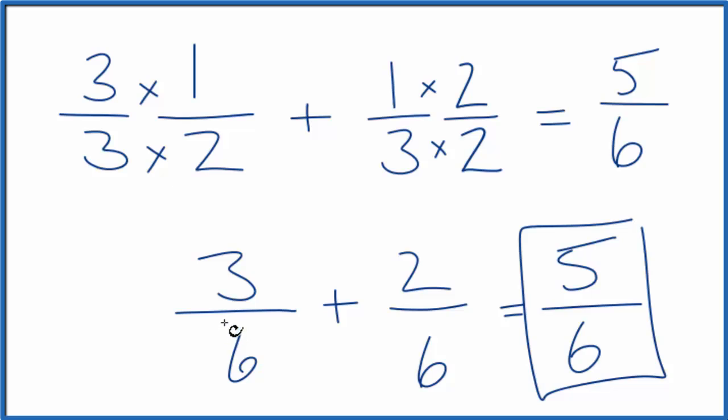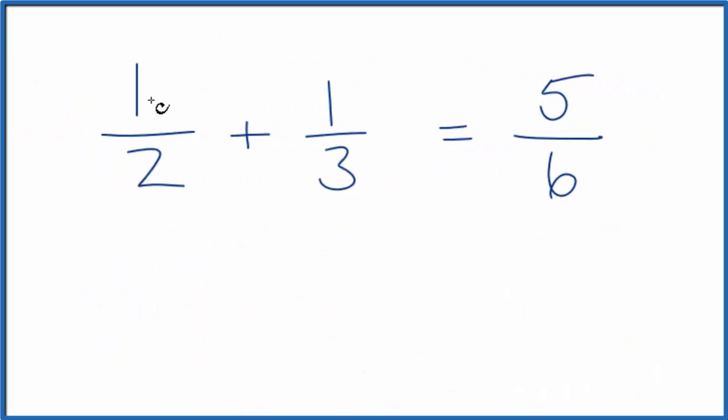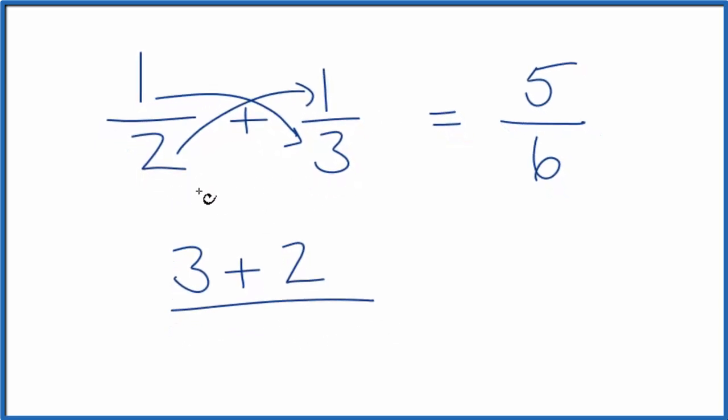Let's check our work real quickly. So we could take one and multiply that by three. One times three is three. And then two, multiply that by one. Two times one is two. Then we'll take the denominators. Two times three gives us six. We add three plus two, we get five over six.